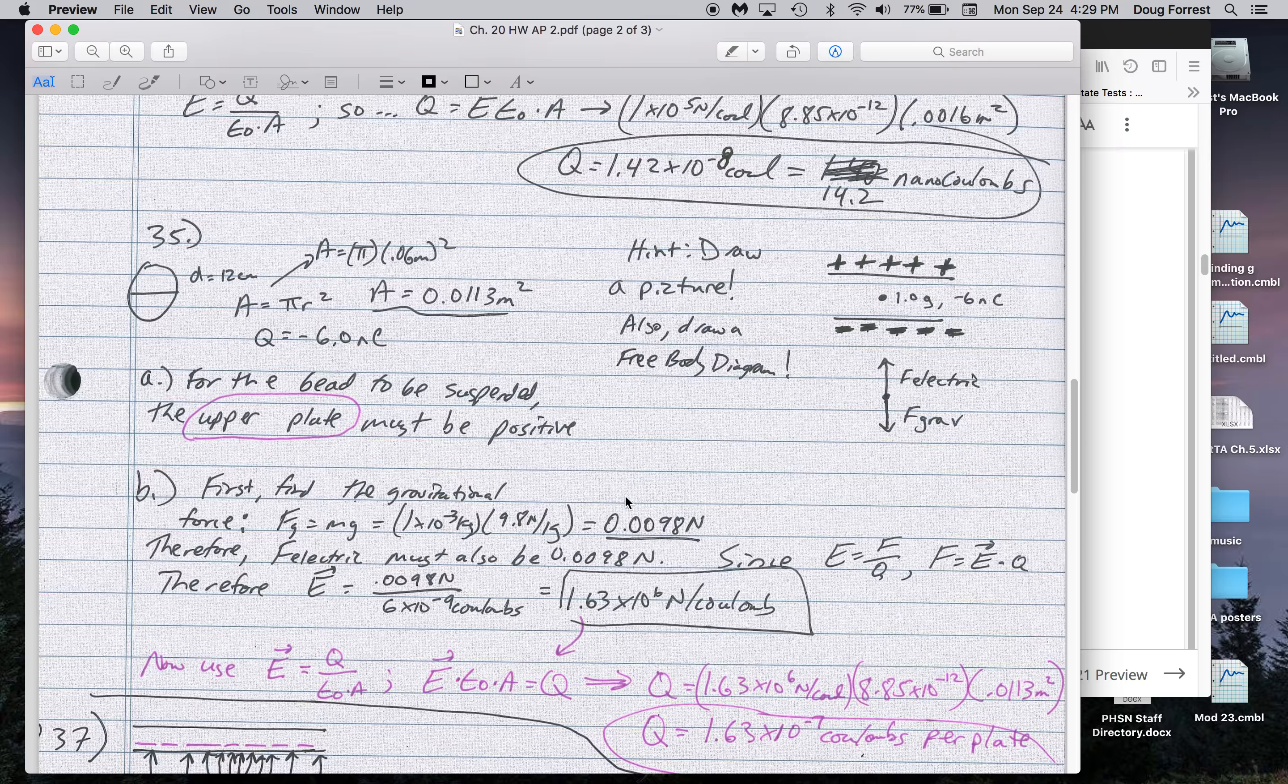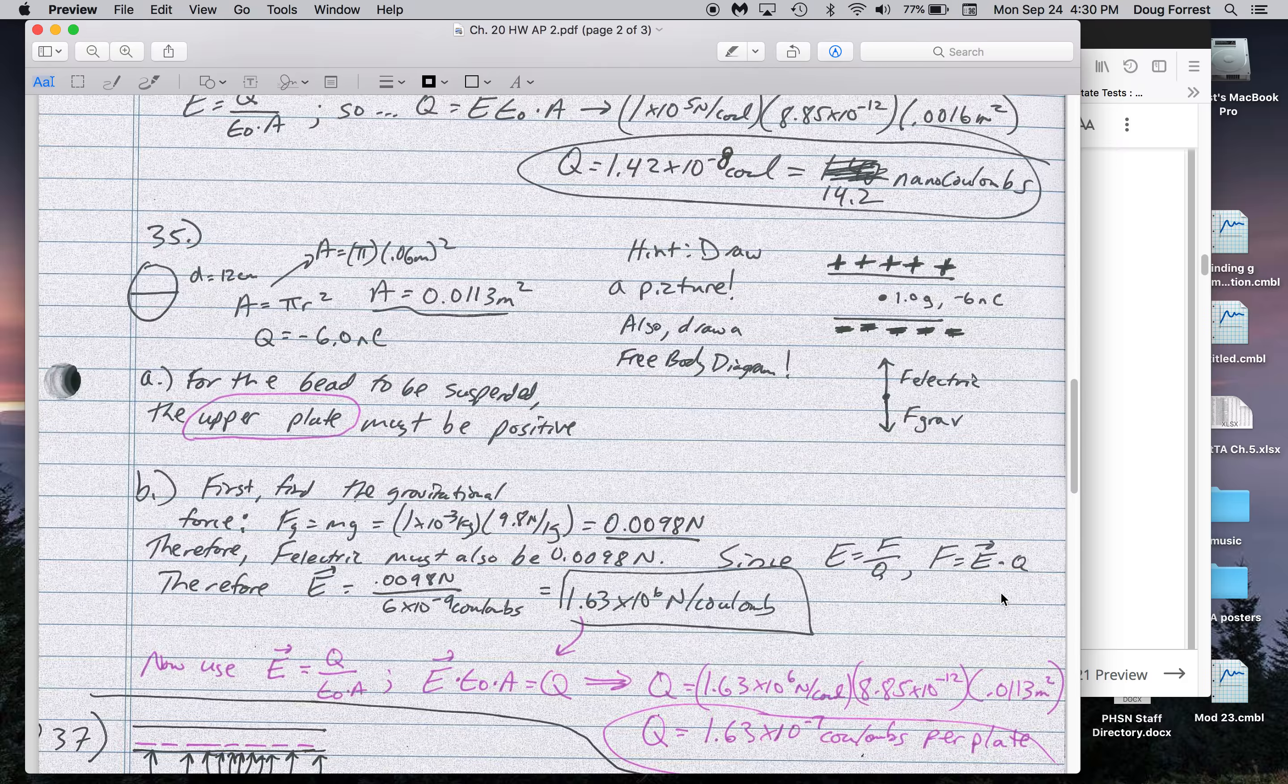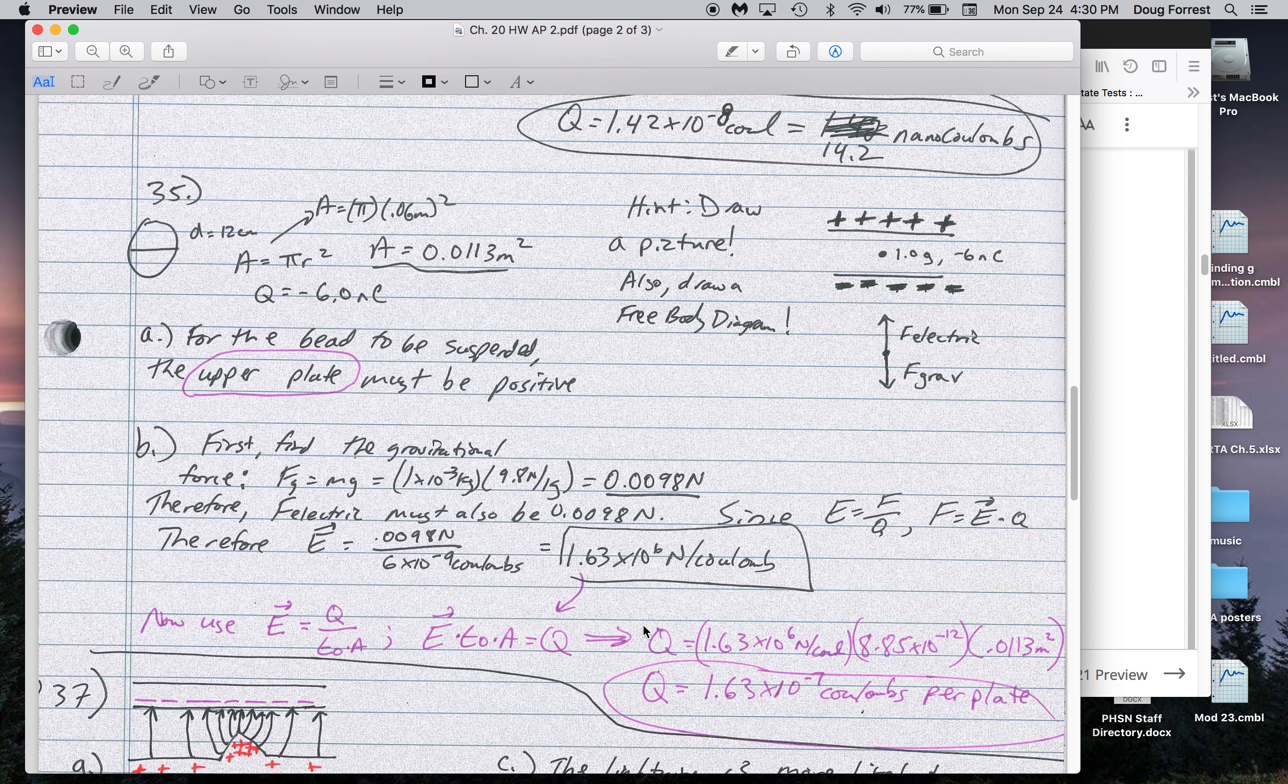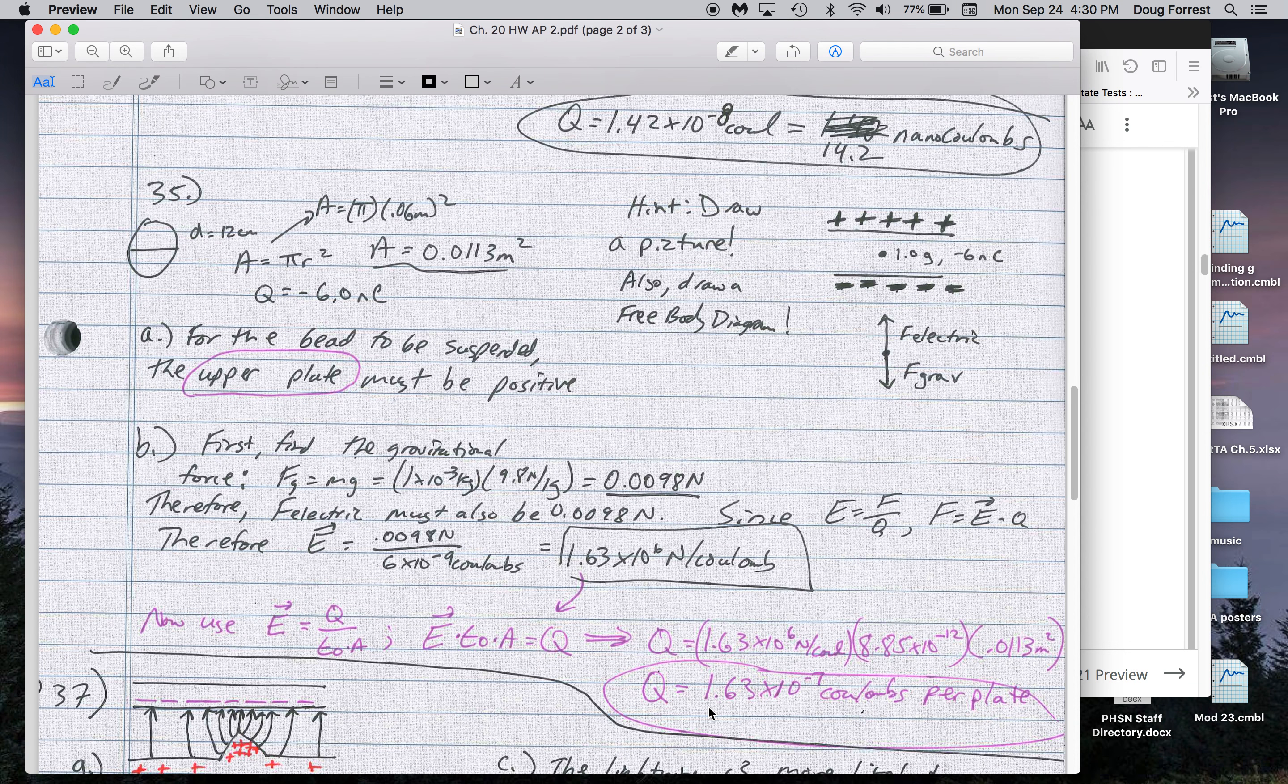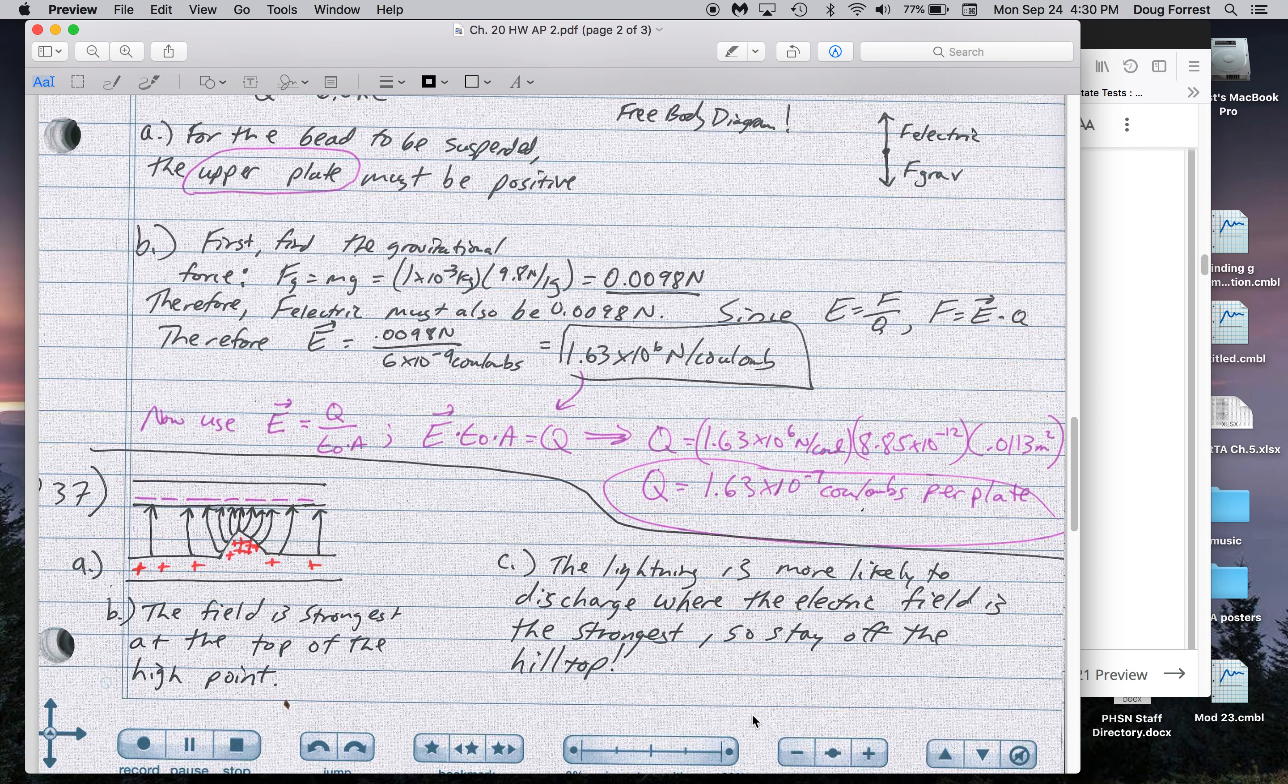So to calculate that, first I get my gravitational force. Therefore, I know the electric force must be the same magnitude. Since E equals F over Q, F equals E times Q. So I can get my electric field strength, which is 1.6 times 10 to the 6 N per coulomb. And now I plug that into the formula for our capacitor. That's how I get the charge per plate. Odd that both of these are 1.63 as the coefficient, but that's the way it was.